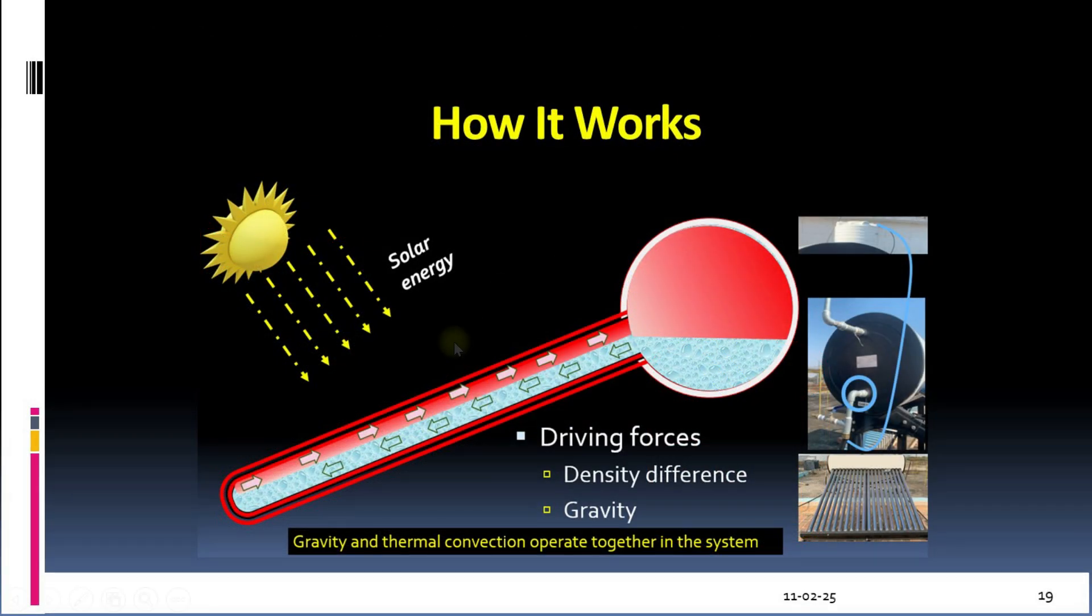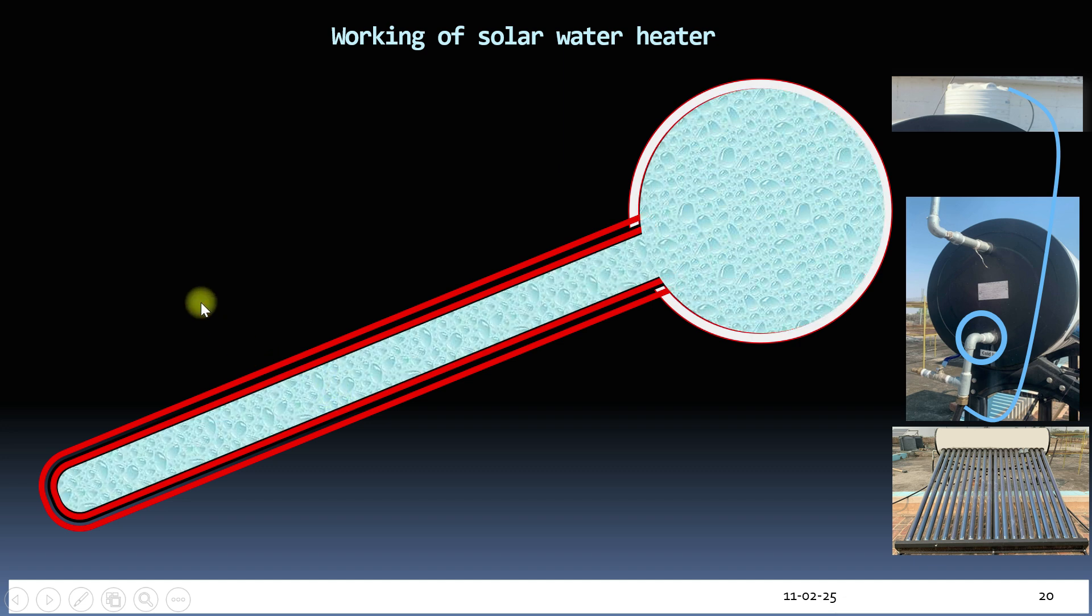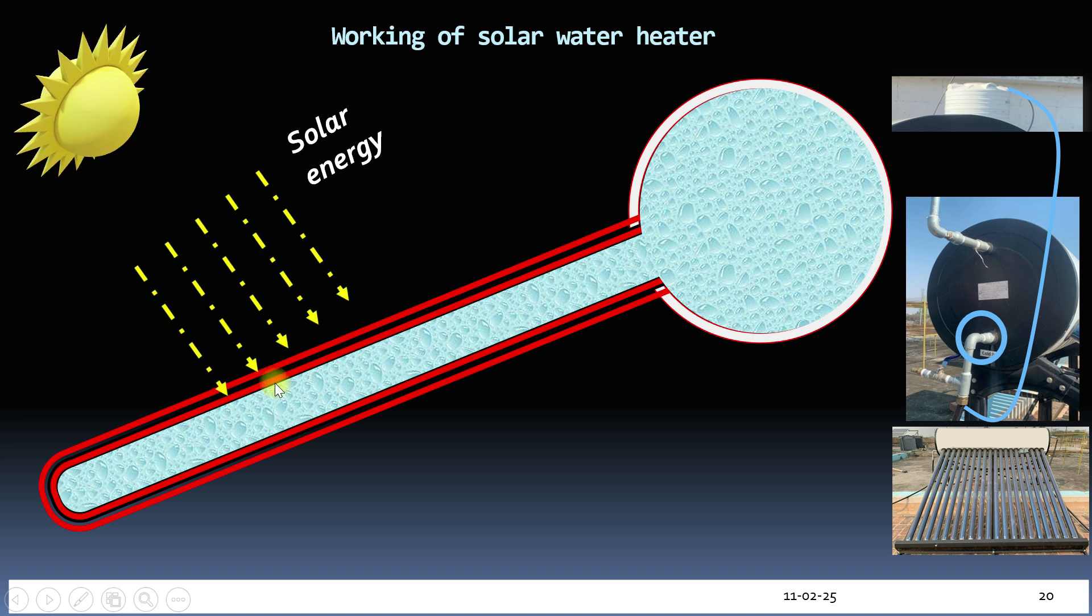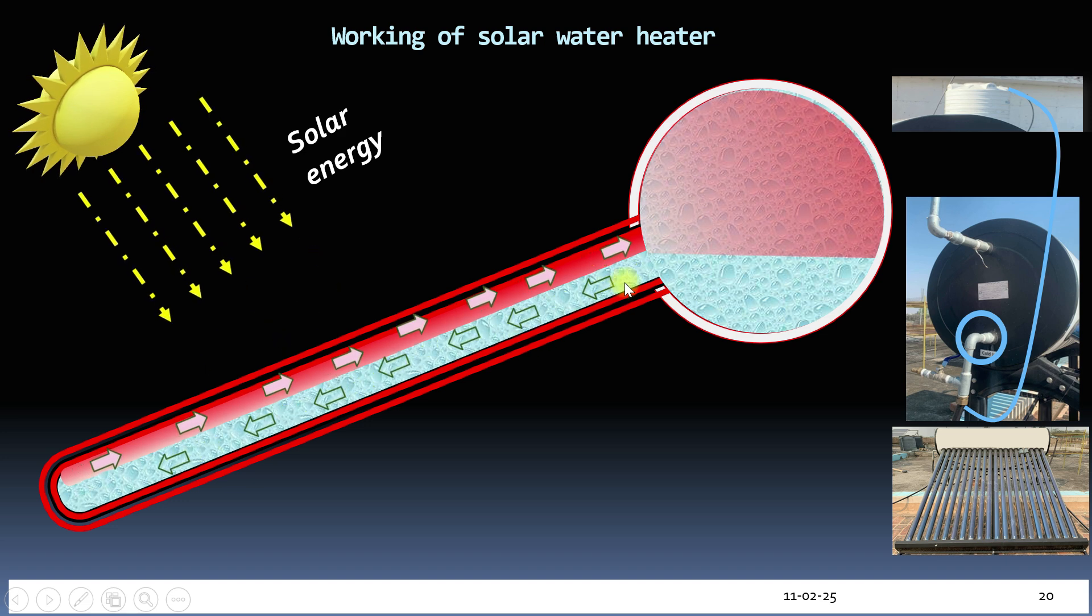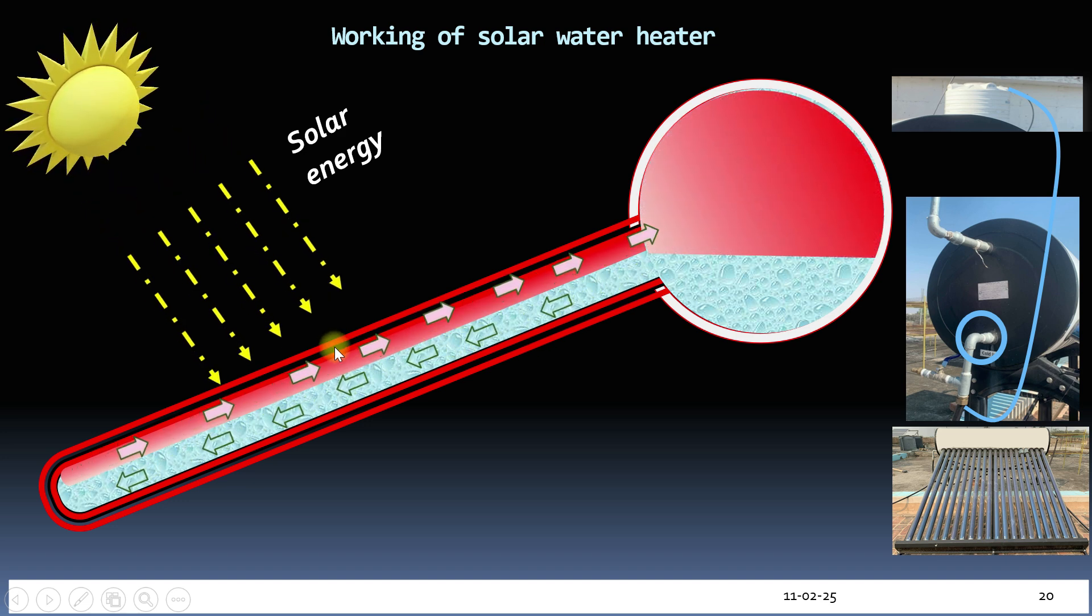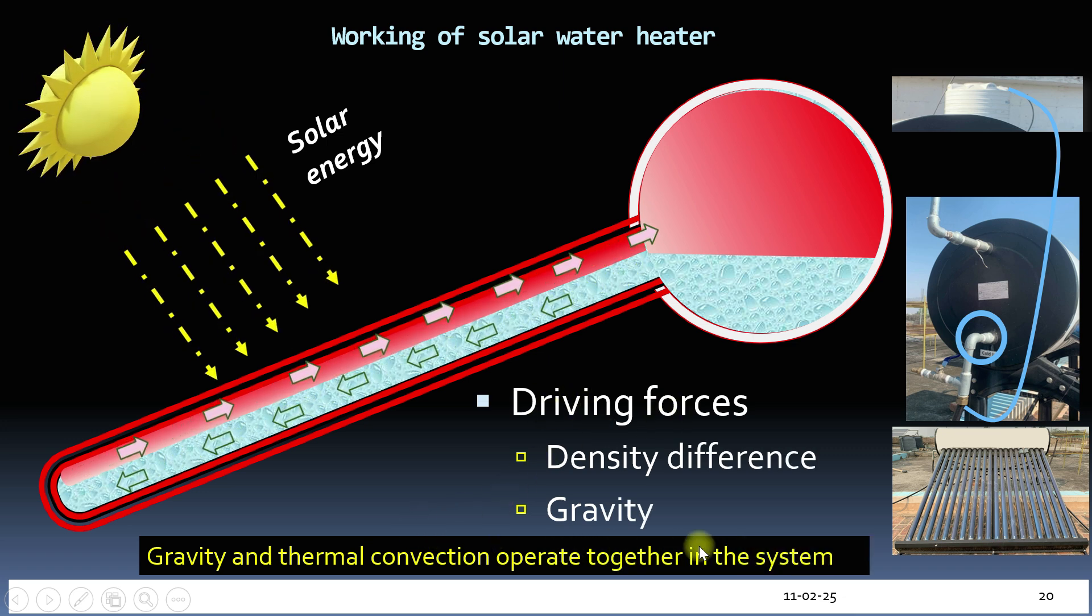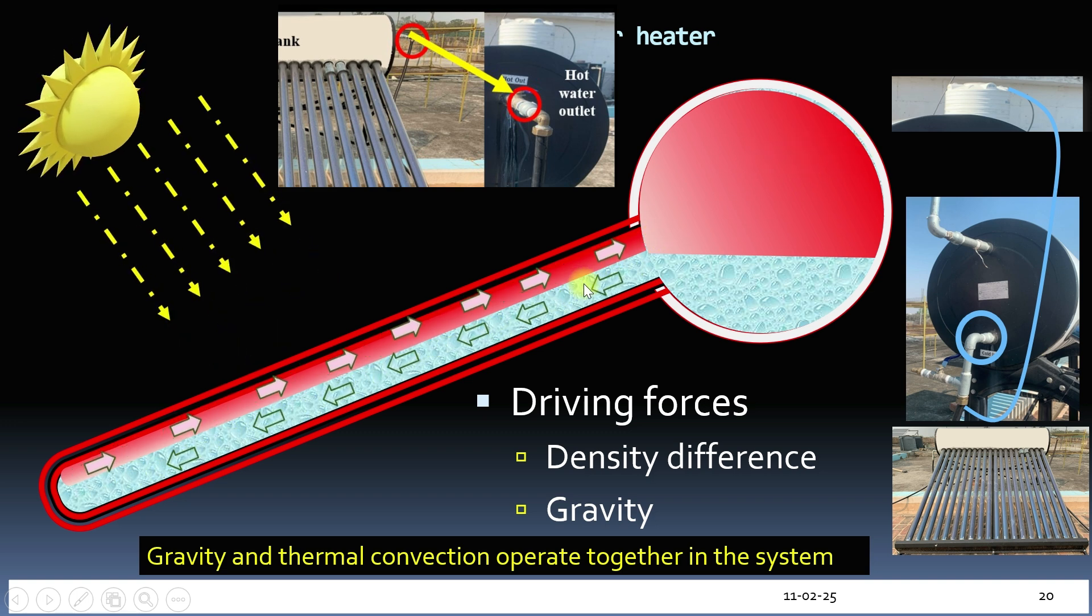Now let's see how it all comes together. Cold water is fed into the water heater from an overhead tank or with the help of a pump. When sunlight hits the evacuated tubes, the water inside heats up and its density decreases. The colder, denser water sinks to the bottom due to gravity while the hot water rises up to the top of the tank. This process is driven by both gravity and thermal convection. The hot water can be used from the top of the tank through the hot water outlet.